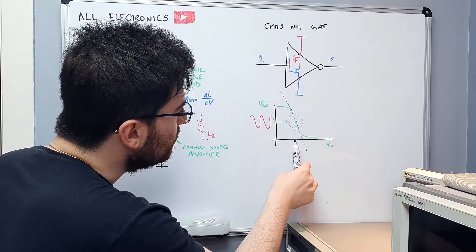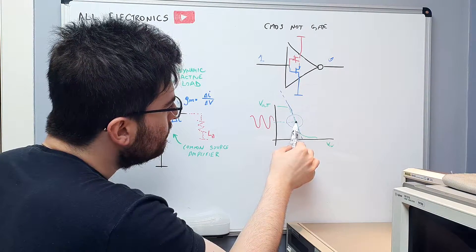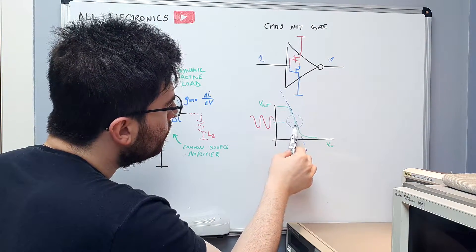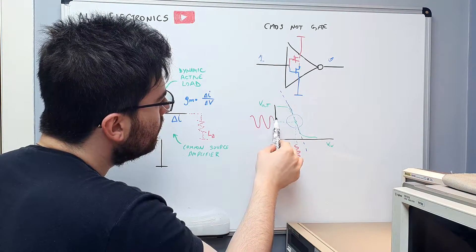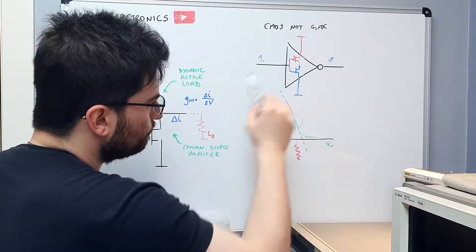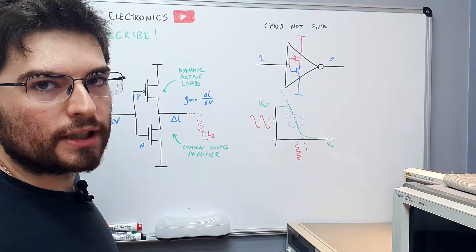And when we have a small signal on the input, the biasing point can wiggle here on the slope of the transition and we have an amplified output on the output of the inverter gate.